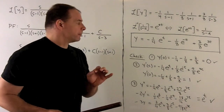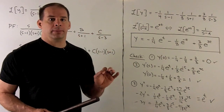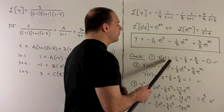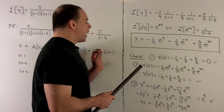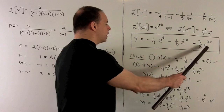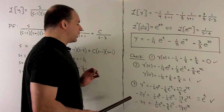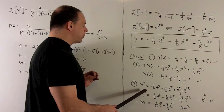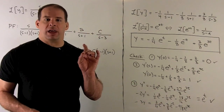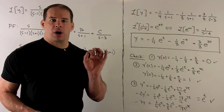We want to check our work by verifying the three conditions of the initial value problem. Substituting t equals 0 confirms y(0) equals 0. Taking the derivative and substituting t equals 0 confirms y'(0) equals 1. Finally, computing y double prime minus 2y prime minus 3y confirms it equals e to the t. The Laplace transform method gets us to our answer.